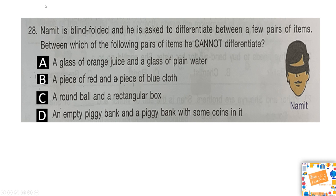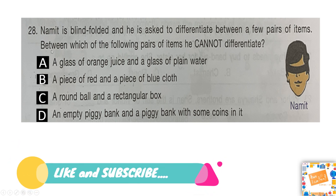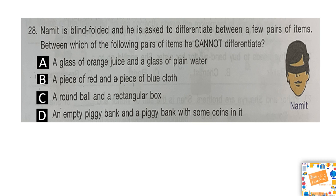Next question: Namit is blindfolded and asked to differentiate between a few pairs of items. Between which of the following pairs can he not differentiate? A: a glass of orange juice and a glass of plain water, B: a piece of red and a piece of blue cloth, C: a round ball and a rectangular box, or D: an empty piggy bank and a piggy bank with some coins in it.